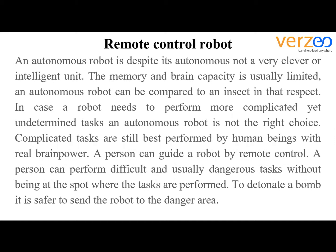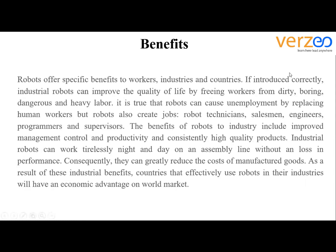For example, a doctor can operate on a person sitting in another room or another part of the country. A person can guide a robot by remote control to perform difficult and usually dangerous tasks without being at the spot where the task is performed. To detonate a bomb, for instance, it is safer to send a robot to the danger area so that we won't lose any human lives.